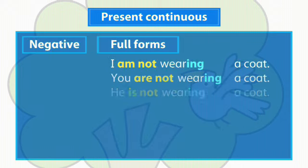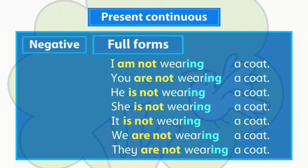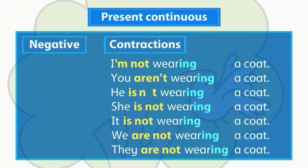We form the present continuous negative like this. The present continuous negative has full forms and contractions of the verb be. We usually use contractions in conversations.